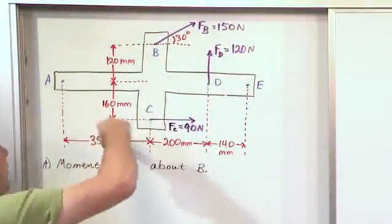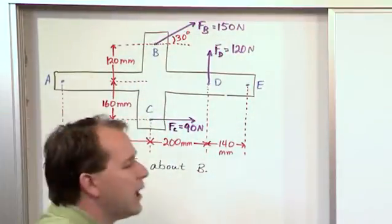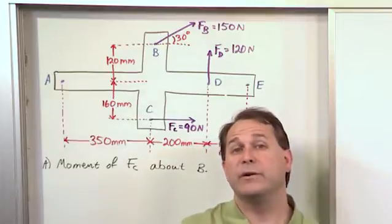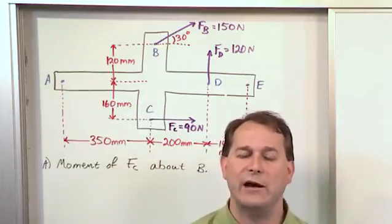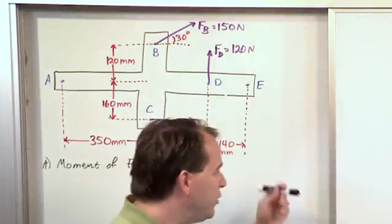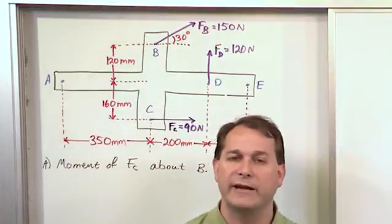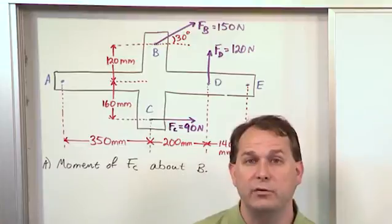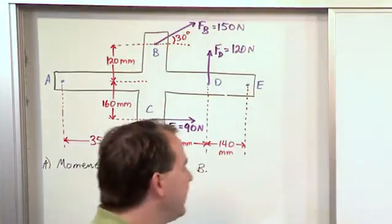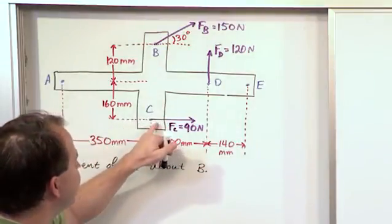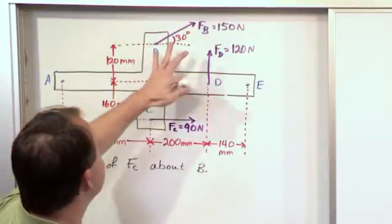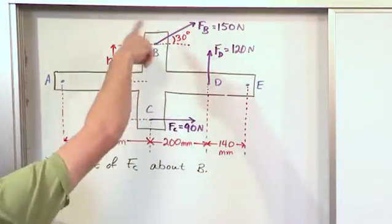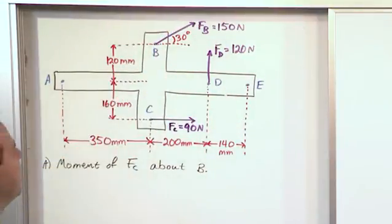And if you remember, we talked before, rotations counterclockwise, the same way that you measure angles in trigonometry, counterclockwise, those are going to be denoted positive. So the moment that's going to be produced by this force acting and causing a rotation about B, it's going to be going in a counterclockwise direction, so it's going to end up being a positive answer. You can do that without even doing any calculations.